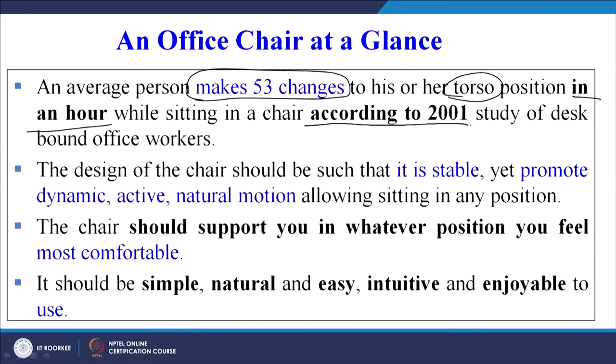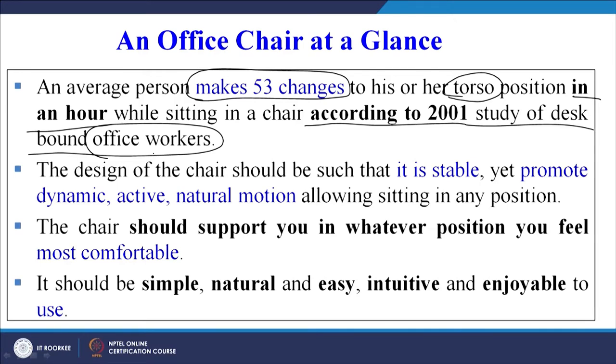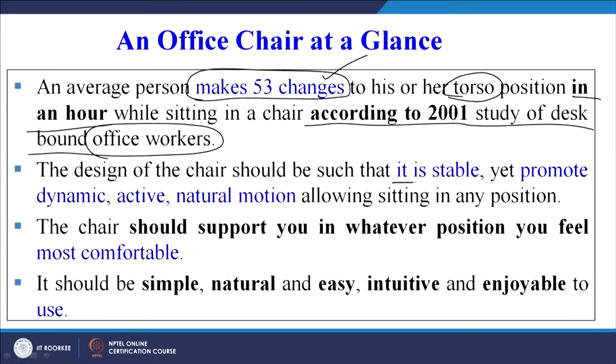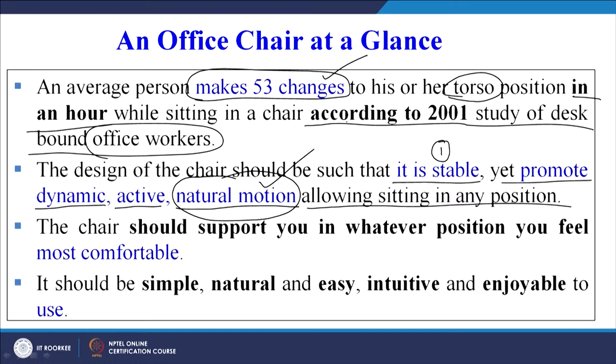This data is important for office workers working at a table and desk. The design of a chair should be such that it is stable, yet promotes dynamic, active, natural motion, allowing sitting in any position. It must be stable but also dynamic and active so that it allows natural motions in different sitting positions.